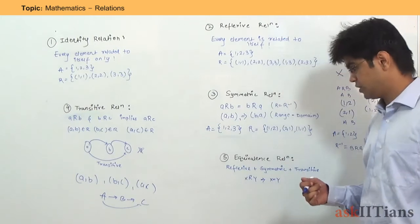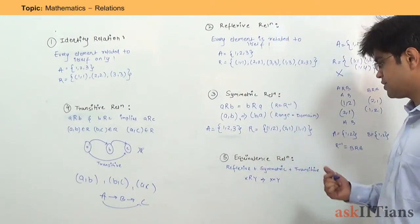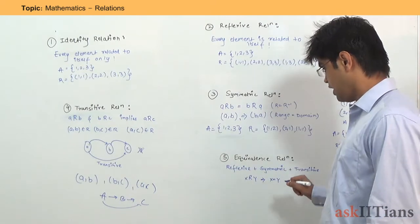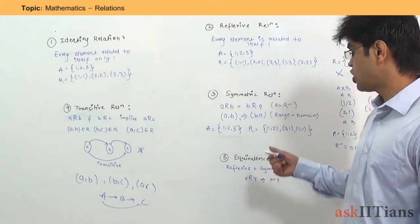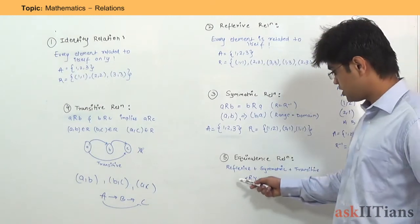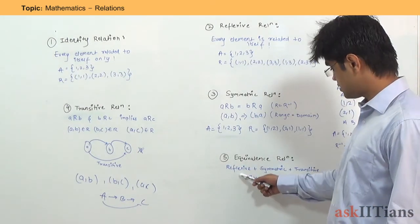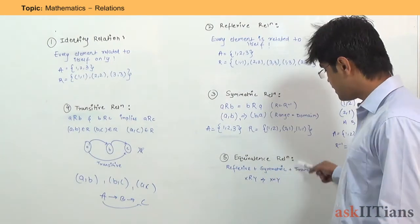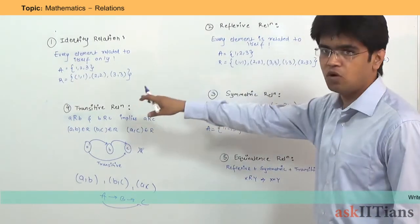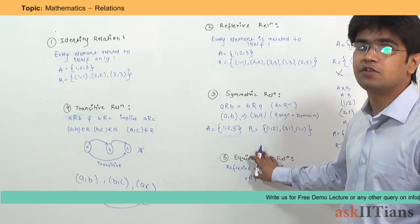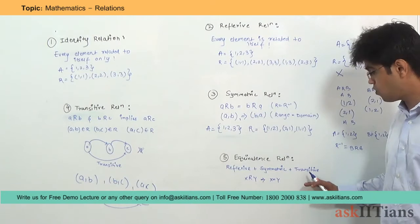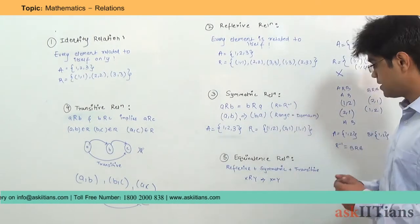The last type of relation is Equivalence Relation. It is very simple — you need to check for Reflexive, Symmetric, and Transitive. If you want to see whether a relation is an Equivalence Relation, check whether it is Reflexive, Symmetric, and Transitive. If a relation is Reflexive, Symmetric, and Transitive all at the same time, then that relation is called an Equivalence Relation — meaning conditions 2, 3, and 4 are all true simultaneously.